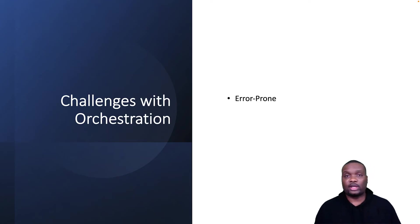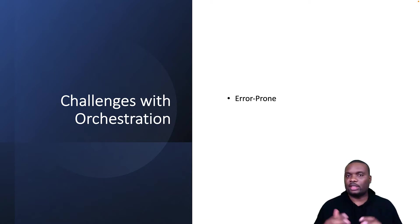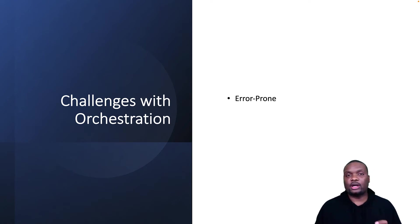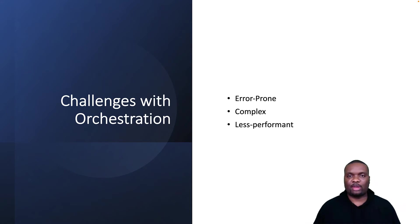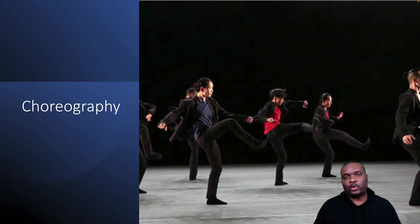Let's take a look at some of those challenges. The first one is that it is very error prone. If something goes wrong in any of these steps, everything crashes and you have to have a lot of spaghetti logic inside the application to handle these error conditions. It is also very complex and less performant because if something goes wrong, it's very hard to keep up with incoming requests as traffic builds up, especially during peak seasons like Black Friday or holiday events. So we have to do something about this, which is why we introduce choreography.